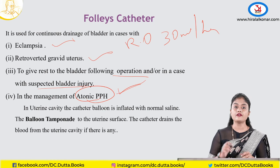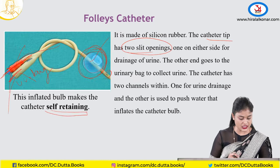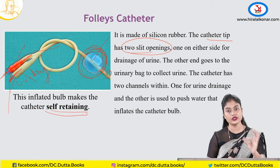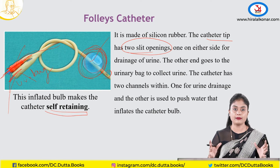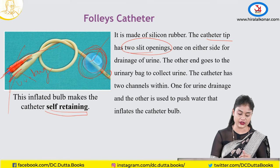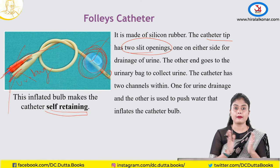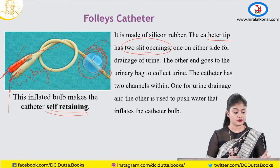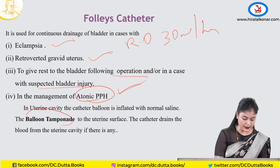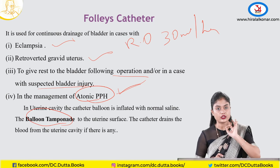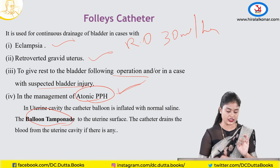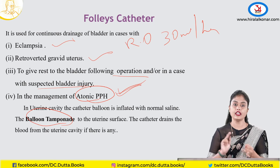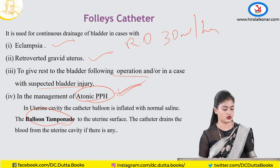Additionally, the Foley's catheter can be used as balloon tamponade in PPH. You insert the catheter into the uterine cavity and inflate the bulb, which creates pressure against the uterine wall and prevents further PPH. So the Foley's catheter is used in PPH in two ways: as a bladder catheterization tool and as a balloon tamponade.